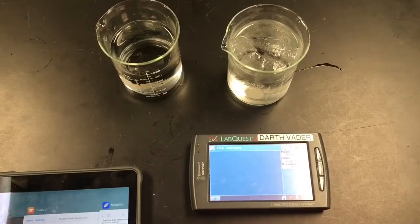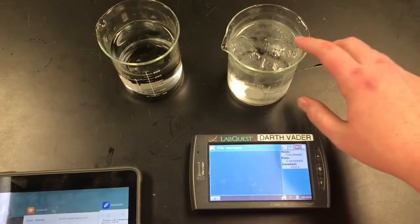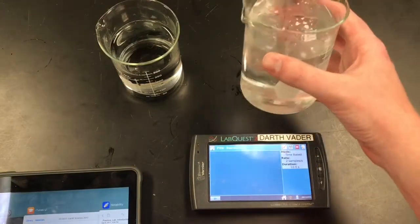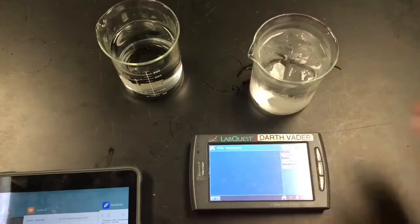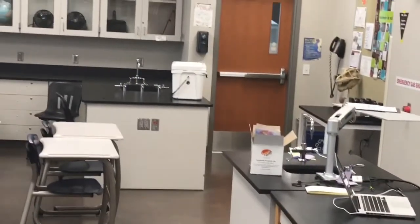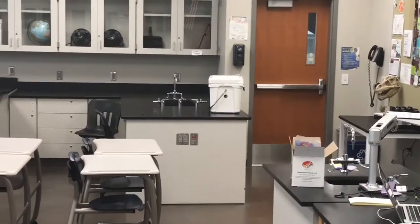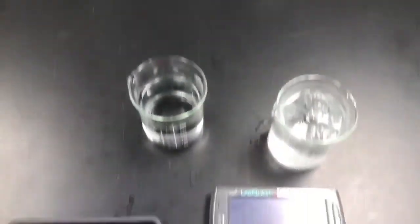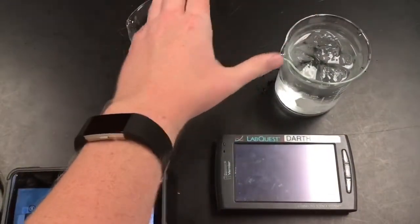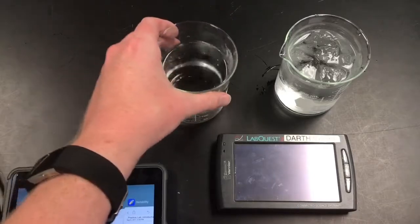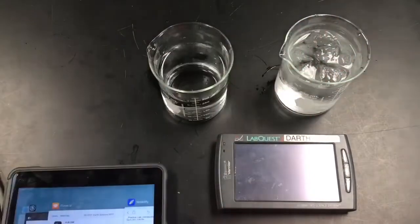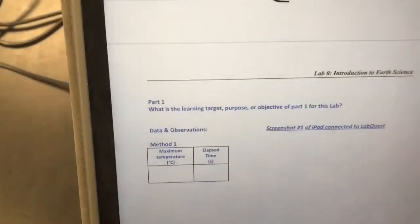The first thing you should do when you actually start the lab procedure is to fill up two beakers of water. So the first beaker right here I filled up with cold ice water. Ice you can actually get at this cooler, which should always be in the front of the room from now on, full of ice. And then this beaker right here is filled up with hot water. So you should have one beaker filled with hot water, one beaker filled with cold water.